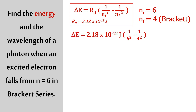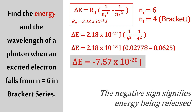You're just going to substitute the values inside — it's very simple. This is the RH value, number 6 is for n_initial, and number 4 is for n_final. You work it out, and finally you get delta E equals negative 7.57×10⁻²⁰ joule. The negative sign signifies the energy being released, so you don't have to worry about it — it simply shows that energy has been released.